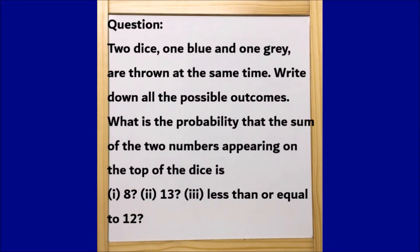The given question is: two dice, one blue and one gray, are thrown at the same time. Write down all the possible outcomes. What is the probability that the sum of the two numbers appearing on the top of the dice is 8, then 13, and the other one is less than or equal to 12? This question is a little bit confusing, otherwise it is very simple and straightforward.